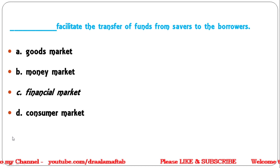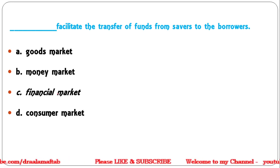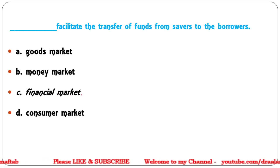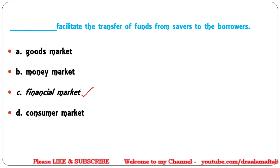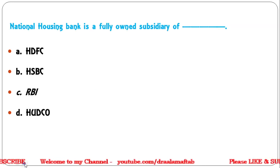Next question: which facilitates the transfer of funds from savers to borrowers — goods market, money market, financial institution, financial market, or consumer market? The correct answer is financial market, as it facilitates the transfer of funds from savers to borrowers.